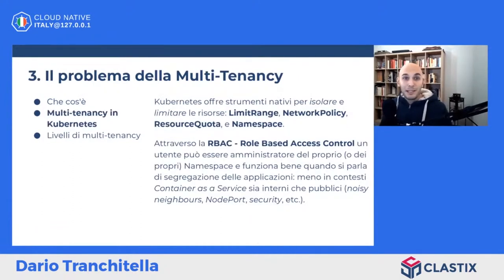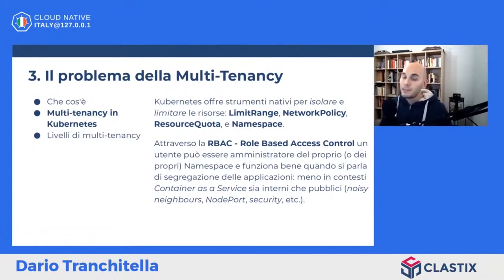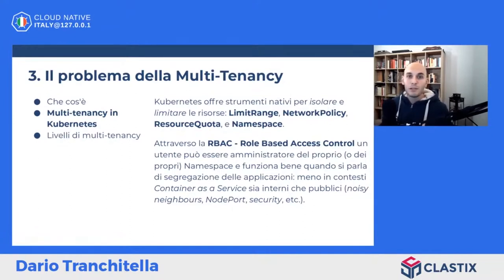Analizziamo velocemente come è possibile ottenere la multitenancy in Kubernetes. Kubernetes offre namespace, limit range, network policy e resource quota. Il limit range ci dà la possibilità di impostare dei limiti sia al rialzo che al minimo per le risorse del nostro pod: possiamo impostare che un pod non possa consumare più di 4 CPU ma debba consumare almeno 0.5 CPU. Le limit range sono fondamentali perché se dobbiamo isolare dei compartimenti applicativi dobbiamo impostare dei limiti, altrimenti un pod senza limiti può saturare tutte le risorse.